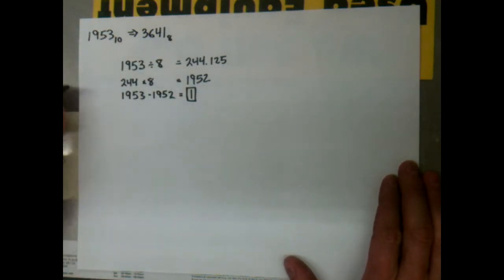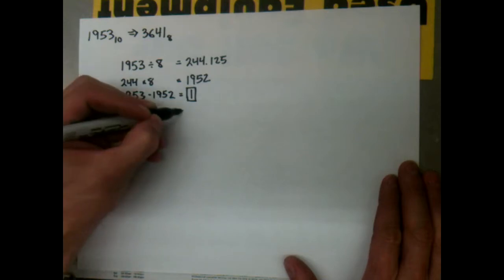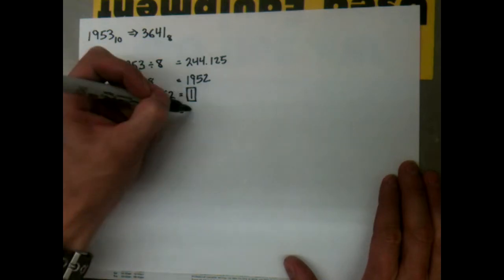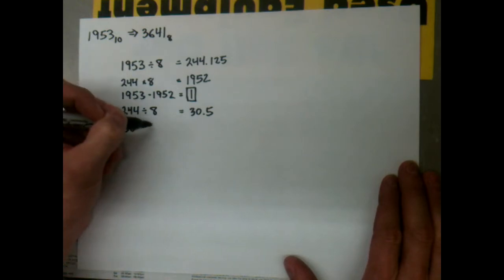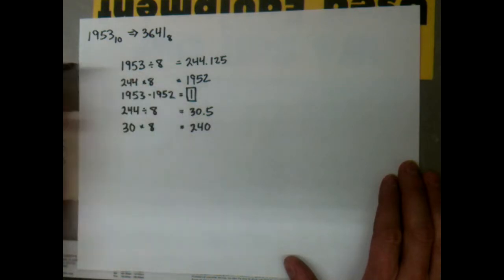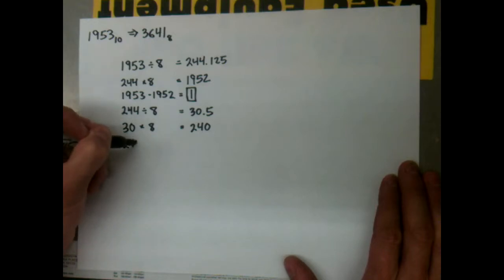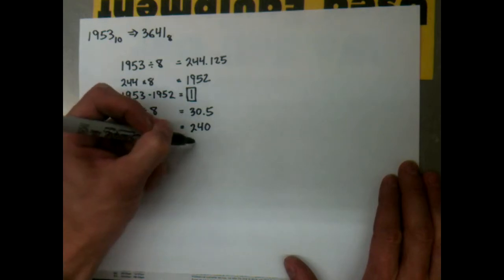Now we take the 244 and we divide it by 8, and that gives us 30.5. We take 30, multiply it by 8, we end up with 240. Take our original 244, subtract the 240 from it, and we end up with 4. Again, we're going to box this number because it'll become important to us.